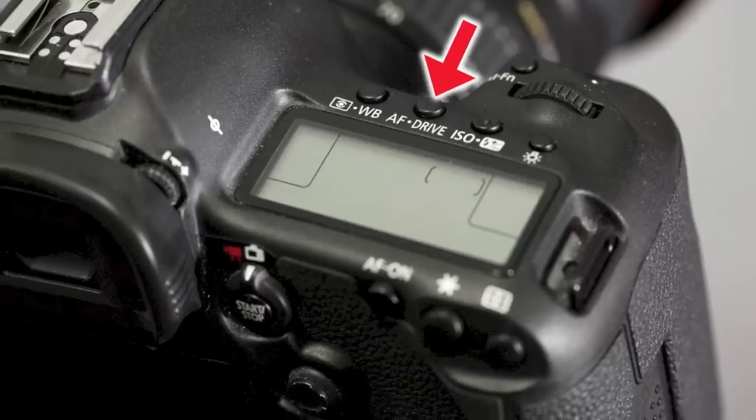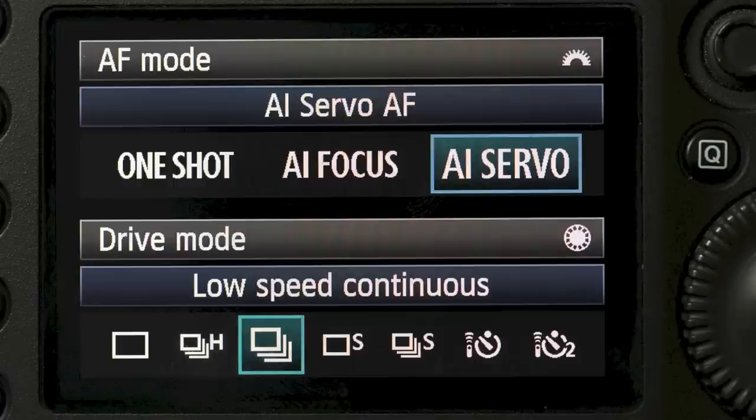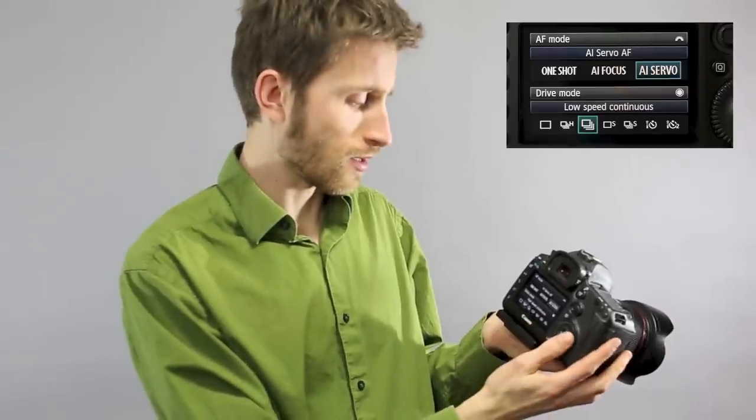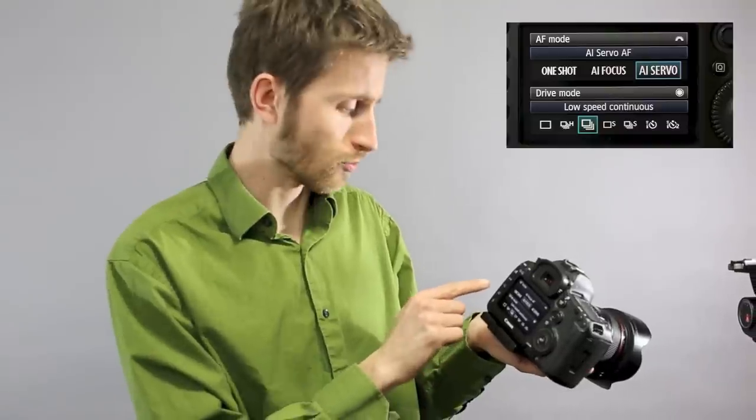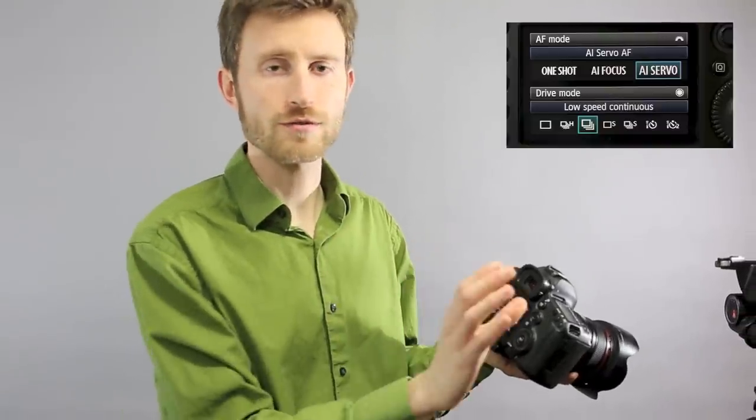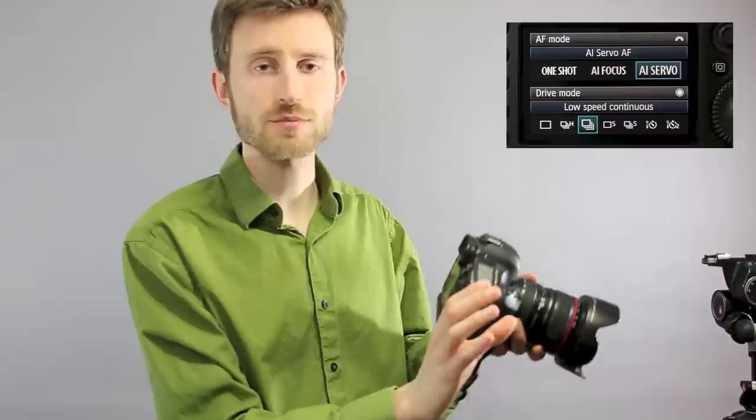To have your AF system automatically tracking your subject, hit Autofocus Drive, and then make sure that you're on AI Servo. AI Focus also will do this, but it starts off as in one shot, so that'll start off focusing and locking on, and only when that subject moves a certain amount will it start to track them. So if you want it to be snappy, put it into AI Servo.